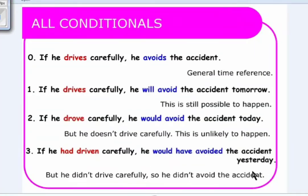The third conditional: 'If he had driven carefully, he would have avoided the accident yesterday.' This is in the past time — he didn't drive carefully, so he didn't avoid the accident and was involved in it. To sum up: zero conditional for general truth, scientific facts, or advice; first for present or future situations likely to happen; second for present or future situations unlikely to happen; third for past situations contrary to fact.